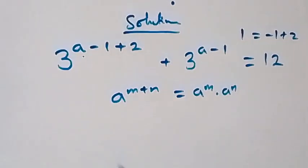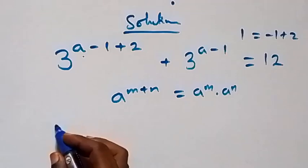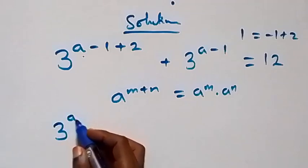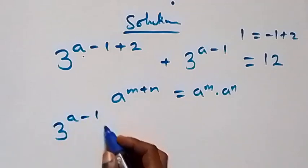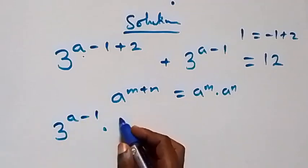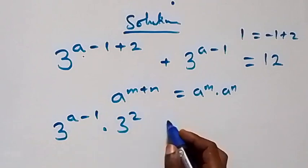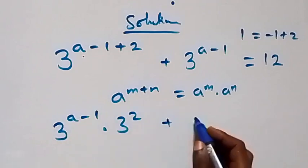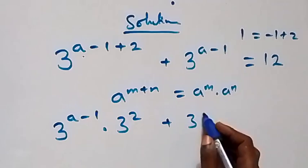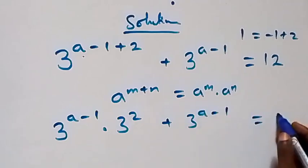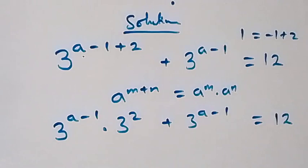So, what we have becomes 3 raised to power a minus 1 times 3 raised to power 2, then plus 3 raised to power a minus 1, equals 12 on this side.